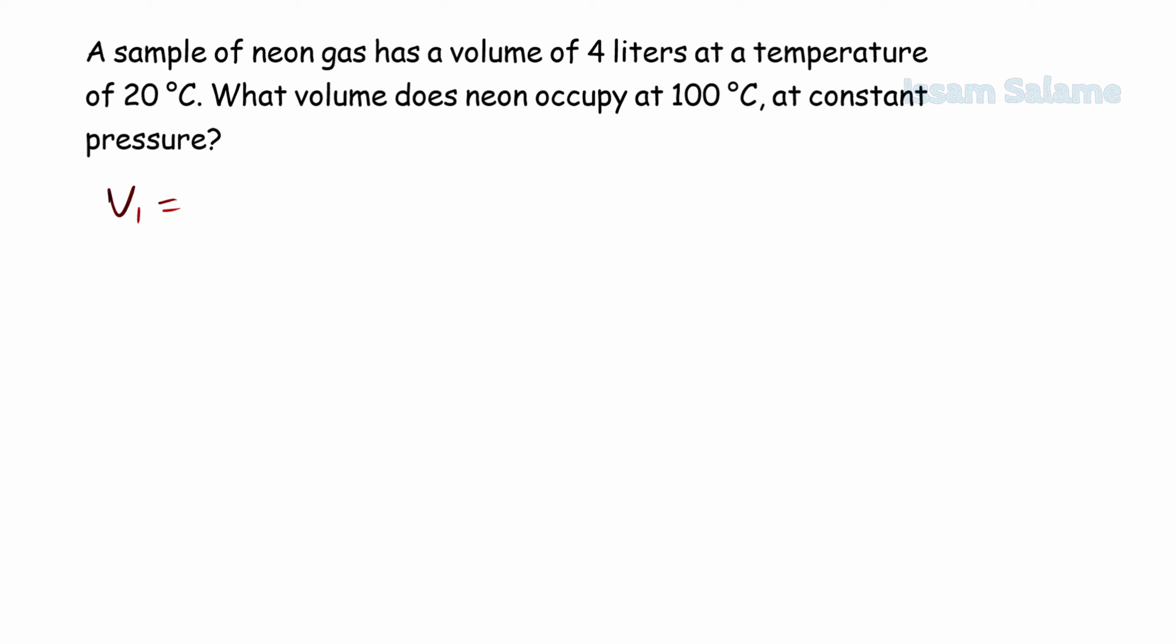As usual, we start with the given. Volume initial equals 4 liters. Temperature initial equals 20 degrees Celsius. V2 we have to calculate it. And final temperature equals 100 degrees Celsius.